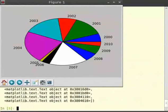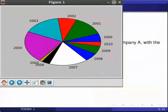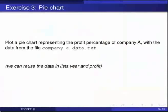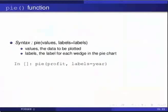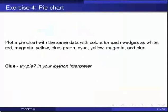Plot a pie chart with the same data with colors of each wedge as white, red, black, magenta, yellow, blue, green, cyan, yellow, magenta and blue respectively. Pause the video here and try out the exercise and resume.